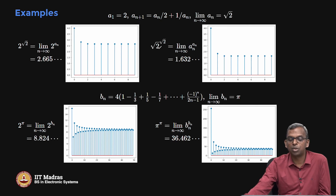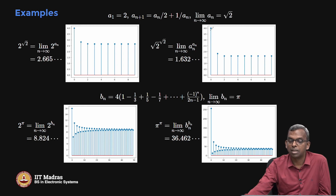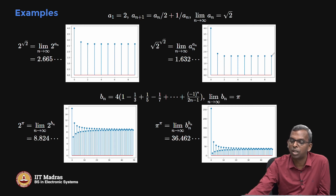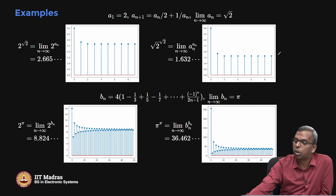You can be even more adventurous and compute (√2)^(√2), where both a and b are real. Here I look at a_n^(a_n), where a_n converges to root 2. On your calculator, (√2)^(√2) is approximately 1.632. The sequence a_n^(a_n) starts at 4, comes down to around 1.78, and then quickly settles to 1.632. Notice how even (√2)^(√2) is handled as a limit of rational numbers.